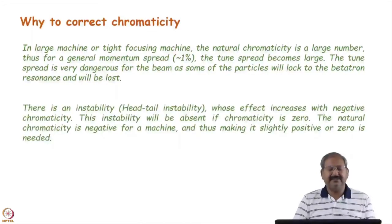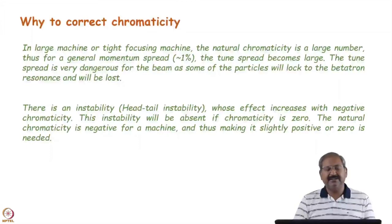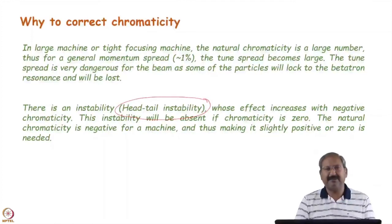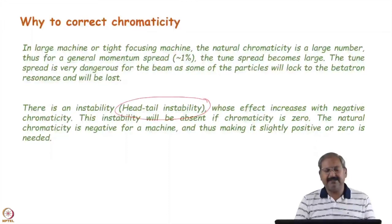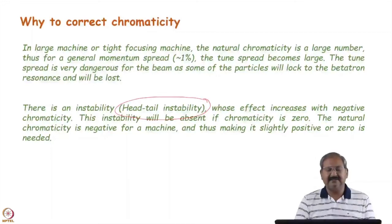The second major reason for correcting chromaticity is head-tail instability. In accelerators, various instabilities can cause beam losses. In head-tail instability, the head of the bunch drives a resonance-like phenomenon for the tail, leading to beam loss. To avoid this instability, chromaticity must be made zero. These are the two main reasons we must correct chromaticity.